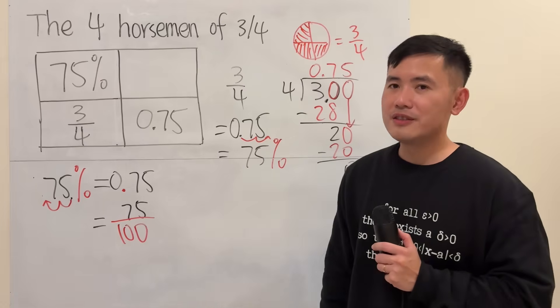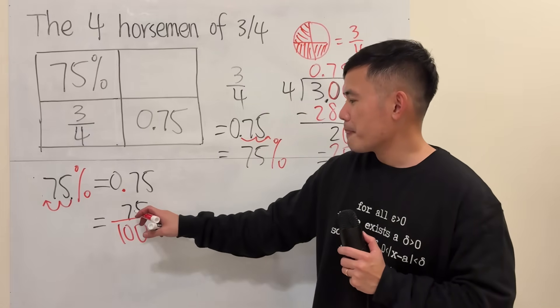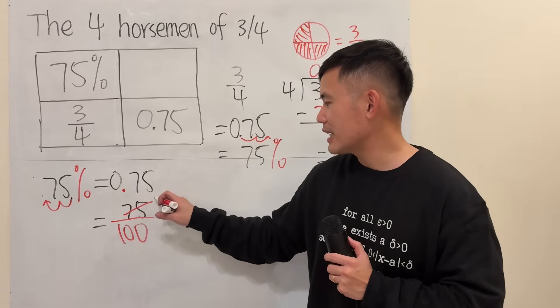Now, how do you reduce this fraction? You can think about it. 5 goes into 75, 25 times.